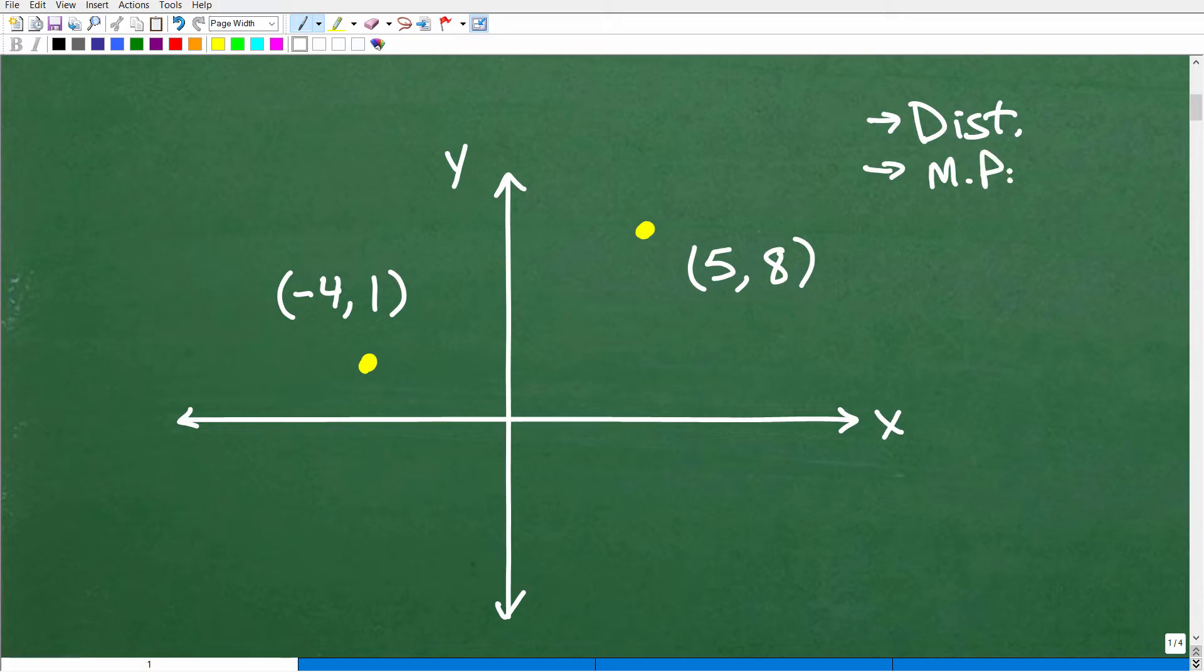So here's a good illustration of what we're talking about. So here we have two points, two ordered pairs on the X, Y plane. You could plot, let's say, for example, this point 5, 8. And here we have another point, negative 4, 1, for example. Now, if I wanted to find the distance between these two points, i.e., from this point all the way over to this point, I want to find the actual distance.